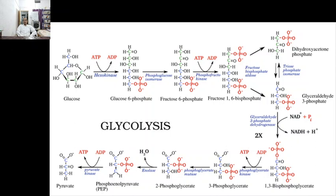The glycolytic pathway is also known as the Embden-Meyerhof pathway, which has two phases: the priming phase and the energy-yielding phase. As illustrated in the figure shown, you can see the whole pathway. The red color indicates the transfer of phosphate group from one compound to another. The phosphate group is transferred from ATP to glucose in the priming phase, and in the yielding phase the phosphate group comes back to the ATP molecule.